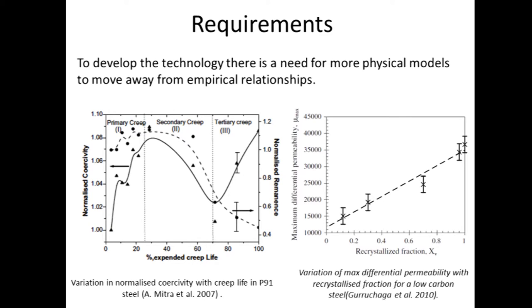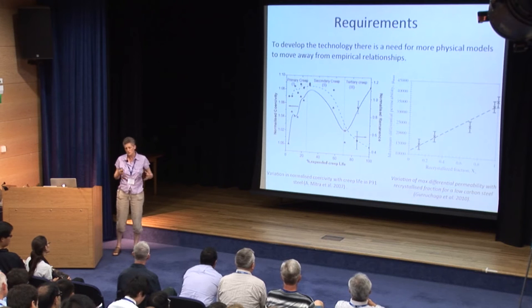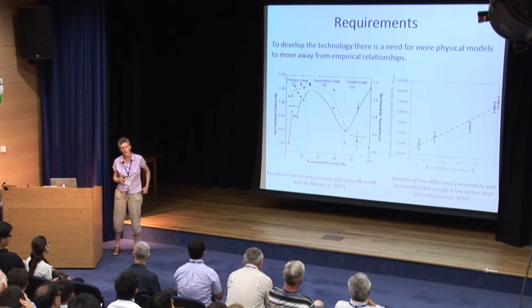The kinds of things that can be done already — I've put some examples up here — there are relationships in the literature between a magnetic or electromagnetic property and either mechanical property information, such as creep life, or microstructural information measured by other techniques such as metallography or recrystallized fraction. There's quite a lot of lab-based tests that can do that, but in order to have something more generically useful — so somebody can use it with different steel types without lots of calibration samples, which is where we currently sit — we need to take this a little bit further.